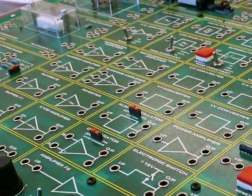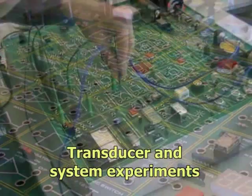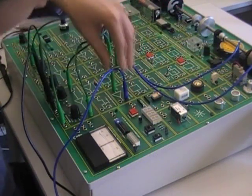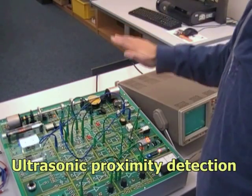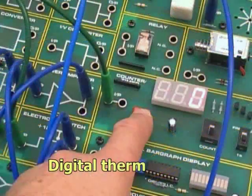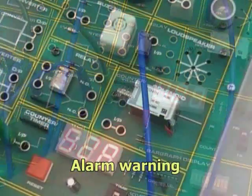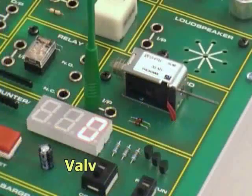The signal conditioning circuit blocks enable the learner to perform experiments with the transducers. They also enable systems to be investigated, for example, a proximity detection application using ultrasonics, an incubator temperature control, a digital thermometer, alarm warning, closed loop motor control and valve controller.